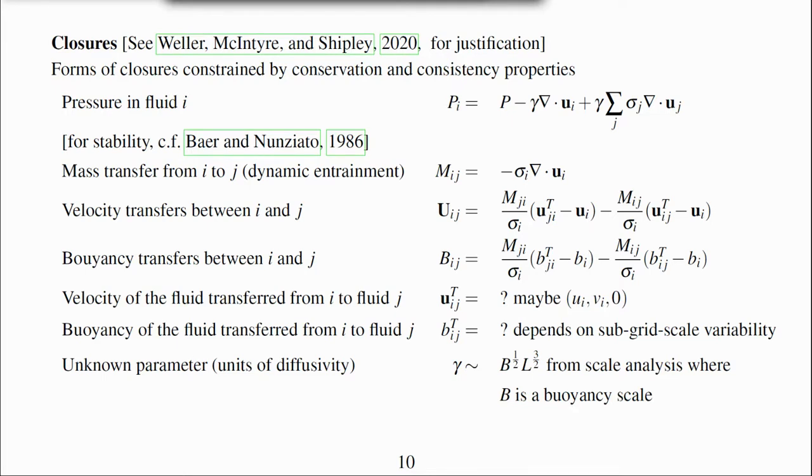The difference between the pressure in fluid i and the mean pressure is proportional to the individual divergence of each fluid. This form stabilizes the equations and has similarity to the Baer and Nunziato model of multiphase flow.